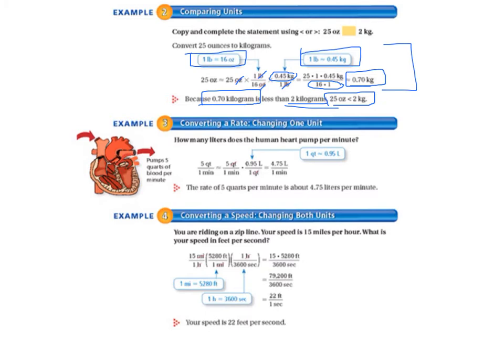Converting a rate, we're going to change one unit. How many liters does the human heart pump per minute? So we have 5 quarts per minute is approximately equal to, and we're going to change the quarts to liters. We've got our 5 quarts per minute, and we're putting the quarts diagonal to each other, and that puts the liters on top. We still have the minutes hanging out down there on the bottom. And then we have 0.95 liters up on the top to multiply it by.